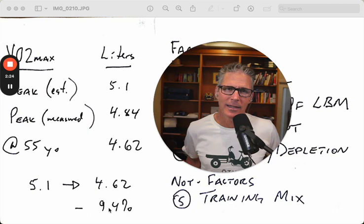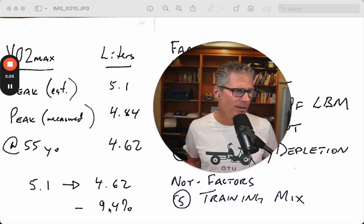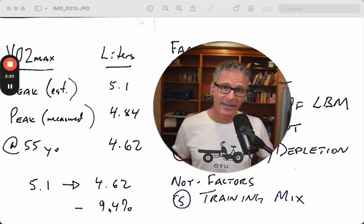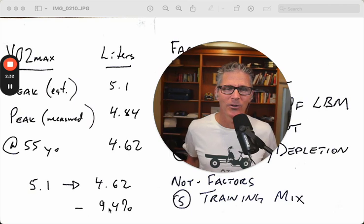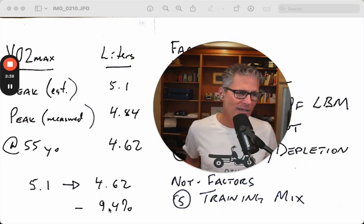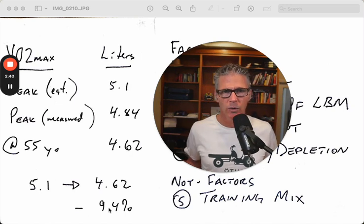I was curious how that stacks up, so I punched into Google 'declining VO2 max with age.' Here's what it said, a rule of thumb you might have heard as well. VO2 max, or maximal oxygen uptake capacity, typically decreases with age.